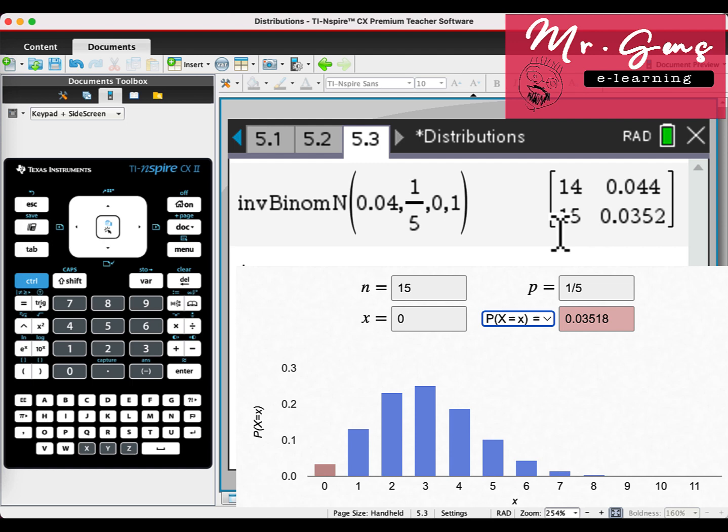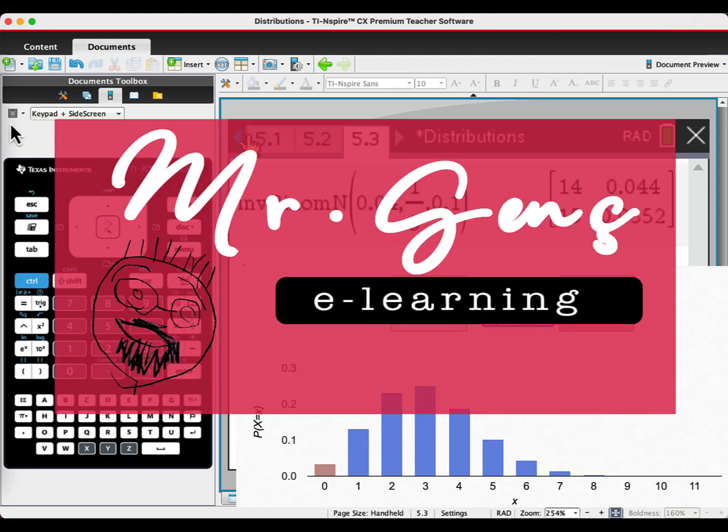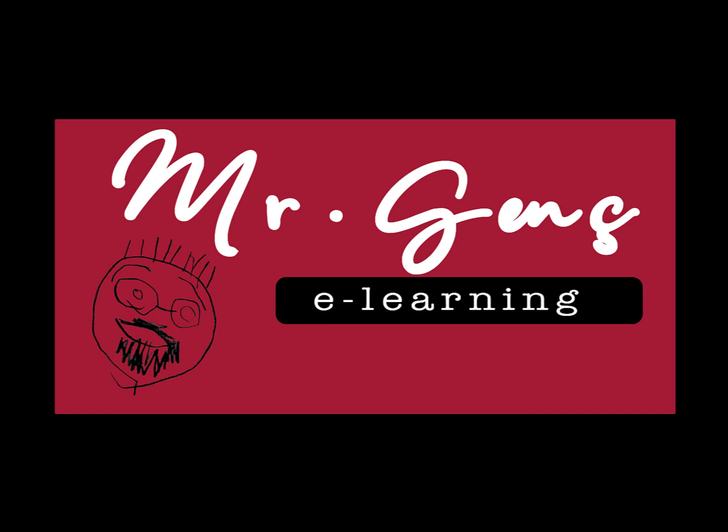The reason why we didn't use nsolve is we don't know the exact probability. We are just given the range, probability was greater than 0.96, so we couldn't find the exact value, so nsolve is useless for this case. Thank you all for watching. Don't forget to subscribe.